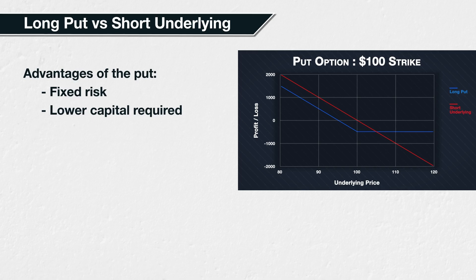If you buy a put option with a strike price of $100 instead, you will still be able to sell the shares at $100 each if the price decreases, but you will also still benefit if the price does indeed continue to increase to $150.